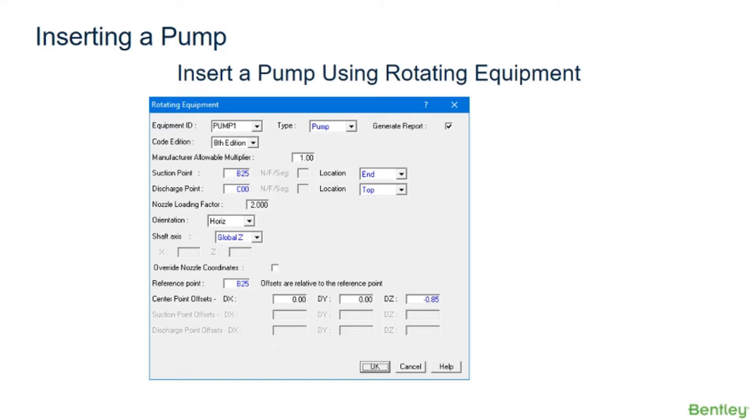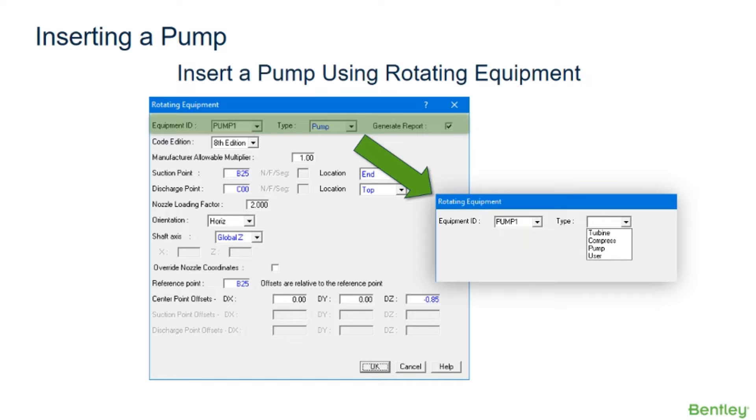In addition, AutoPipe provides a user rotating equipment option to evaluate piping loads using vendor-supplied allowables. The process is to first specify an equipment ID, then select the type, and decide whether or not a report should be generated.